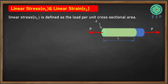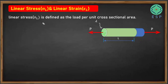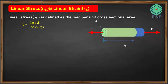The linear stress, called sigma L, is defined as load per unit cross-sectional area. We are assuming the member to be perfectly elastic, so deformation is taking place within elastic limit. In that condition the linear stress will be the load P per unit cross-sectional area A.